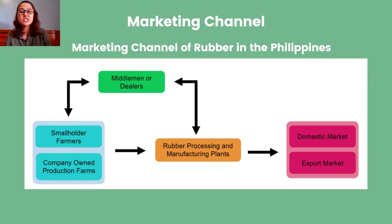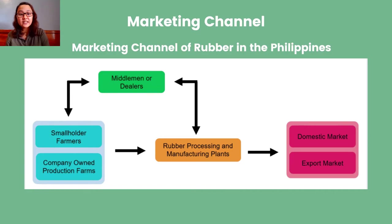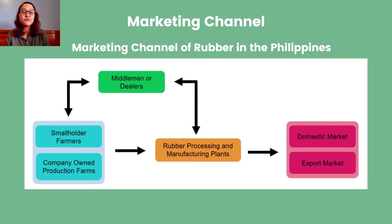The Philippine rubber industry follows a simple marketing channel framework. Rubber tree plants are primarily cultivated by farmers, specifically smallholders, as well as company-owned farms. This is followed by rubber processing and manufacturing plants, where harvested rubber is subjected to further processing until finished high-quality rubber commodities are achieved. Final products go directly to either the domestic or export market. An intermediary — middlemen or dealers — is present between smallholders and processing companies, facilitating necessary transactions and negotiations to connect the production sector to the processing sector.